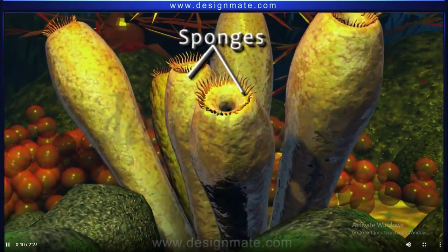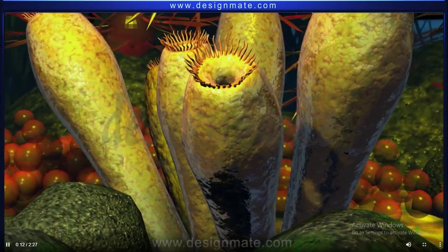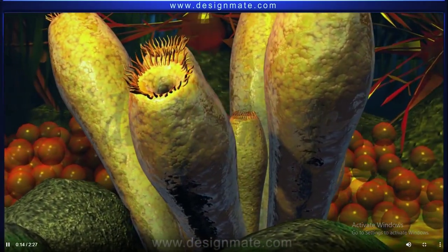Sponges are the simplest of multicellular animals. They are often confused for being plants because of their simplicity.